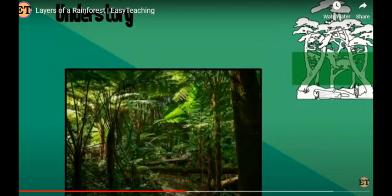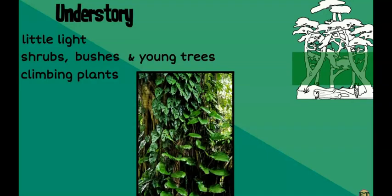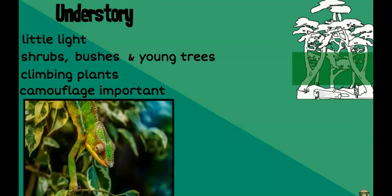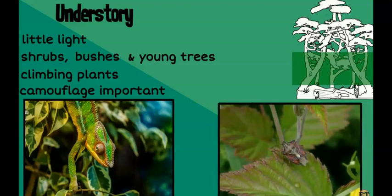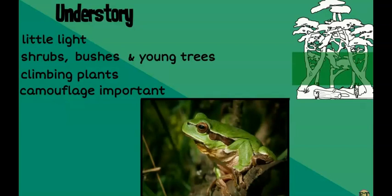The Understory also receives little light. Shrubs, bushes and younger trees occupy this layer, many growing in small patches of light. Many climbing plants grow in the Understory. Camouflage is particularly important for animals that live in this layer. Many animals that live in the Understory rely on the humid and damp conditions to survive.